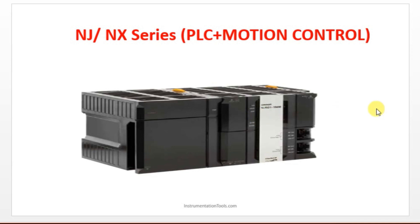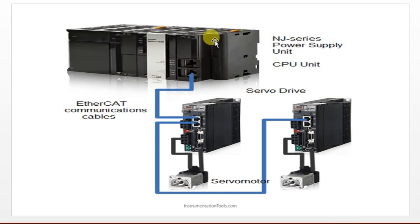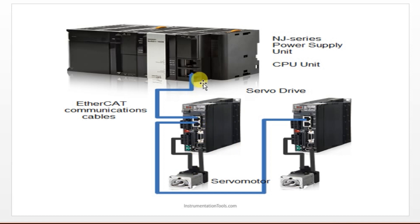When you have servo motors or motion control applications, you can go for the NJ series of Omron PLC. You will use a dedicated module and communicate with a separate servo drive. To communicate between the Omron PLC and a servo motor, you must use the respective servo drive. The NJ series helps you communicate with servo motors in Omron.